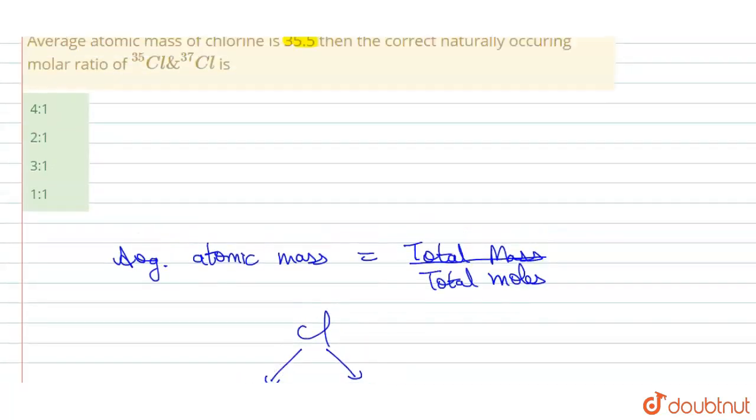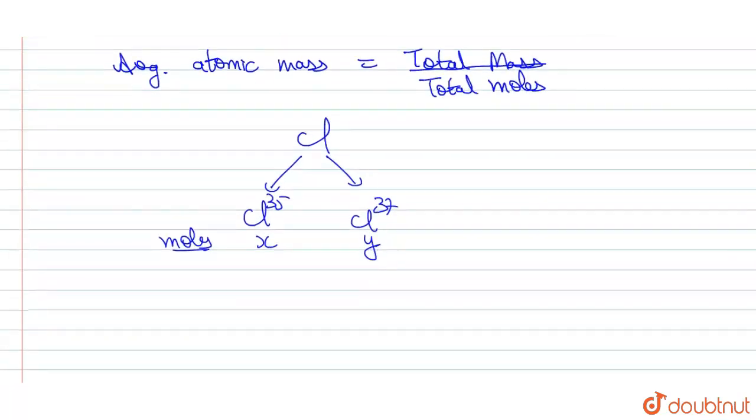So this is the formula of average atomic mass, that is 35.5 equals to total mass, mass of Cl-35 plus mass of Cl-37. Mass of Cl-35 is moles into molar mass, moles is x, atomic mass is 35, plus mass of Cl-37 equals to moles of Cl-37 into its atomic mass that is 37, upon total moles. Total moles are x plus y.